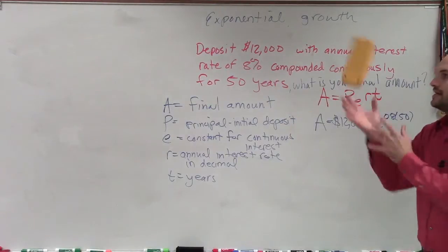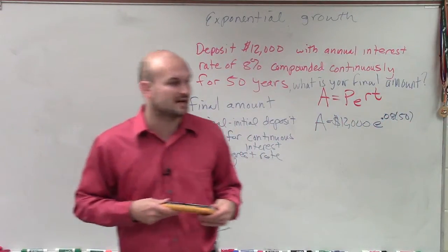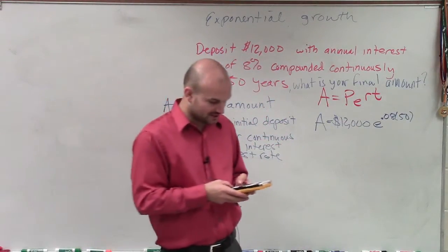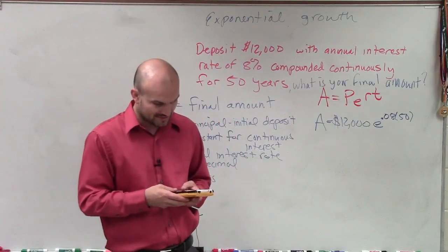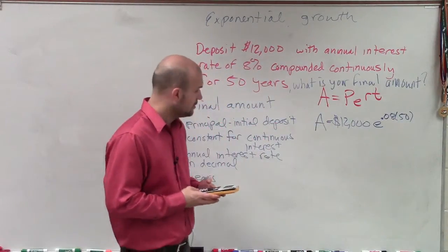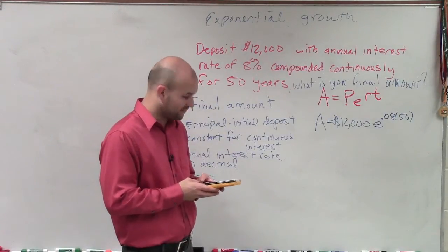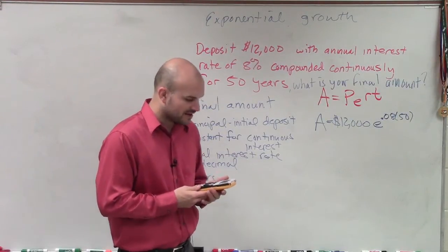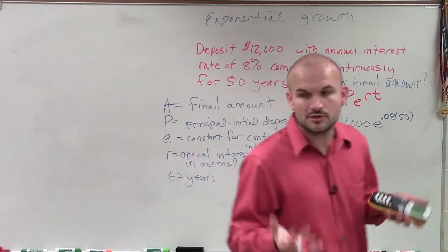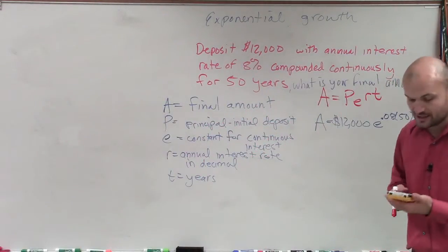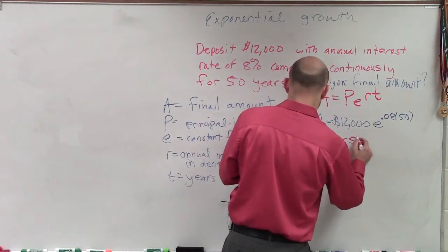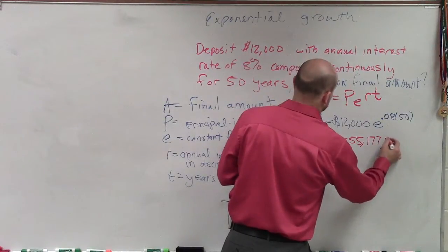Now we take out our calculator. You don't need a graphing calculator for this, but you at least need a scientific calculator that has the constant E. What I always like to do is just do it one step at a time: do 0.08 times 50, find my constant E raised to the fourth, and then multiply that times $12,000. So if you deposit $12,000 into an account that compounds continuously for 50 years at 8%, after 50 years you will have a final value equal to $655,177.80.